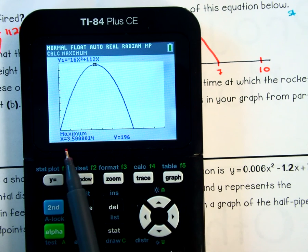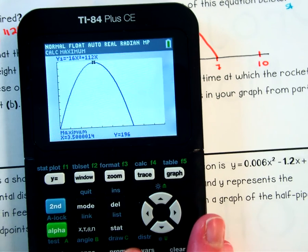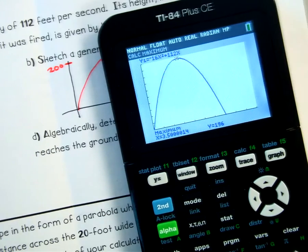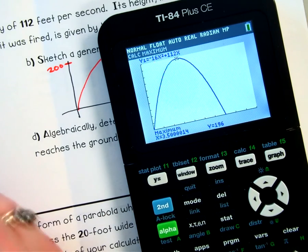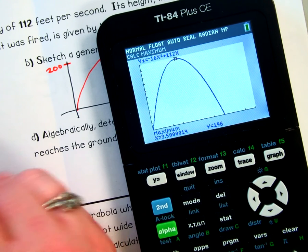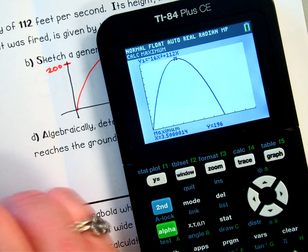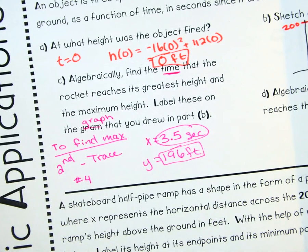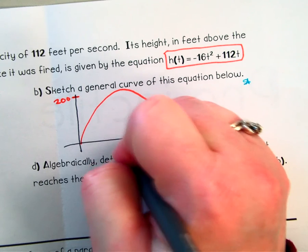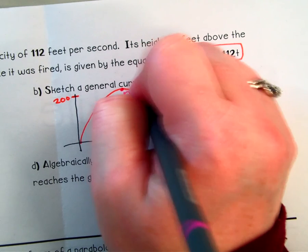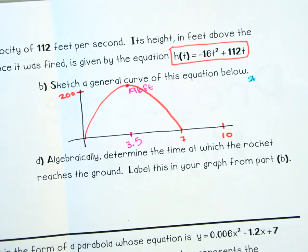So here our maximum is at x equals 3.5. And then the maximum value is 196. So 3.5 seconds, 196 feet. Oops. 3.5 seconds, 196 feet. They told me to draw that here. So this is at 3.5. And this is 196 feet. So I labeled it on my graph.